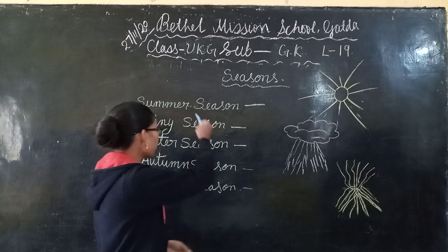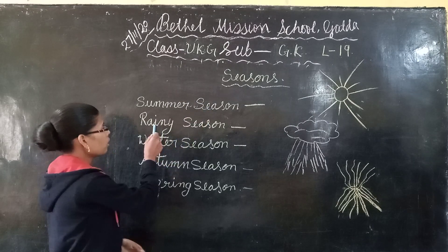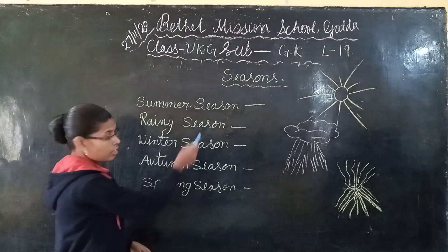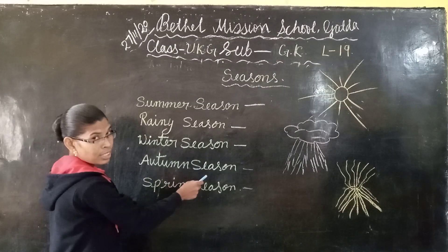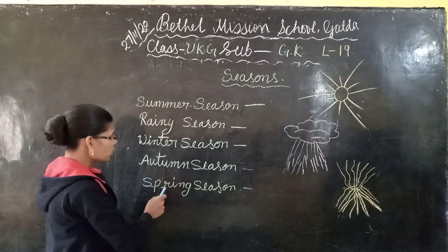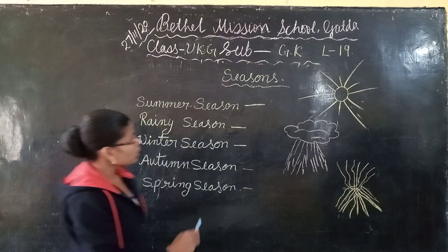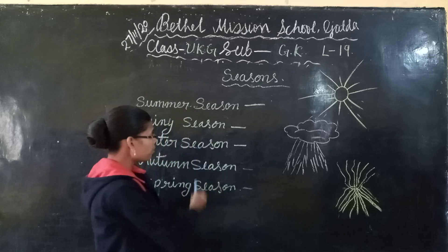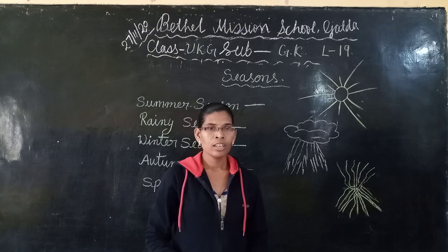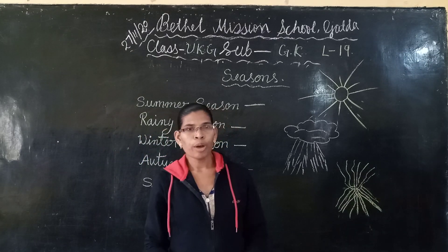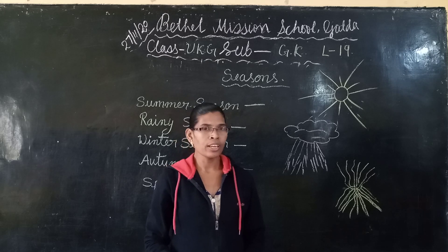Let's read along with me: summer season, rainy season, winter season, autumn season, spring season. Children, I have already explained all five seasons that we see in a year. Now you have to learn these season names along with their spellings. Thank you.